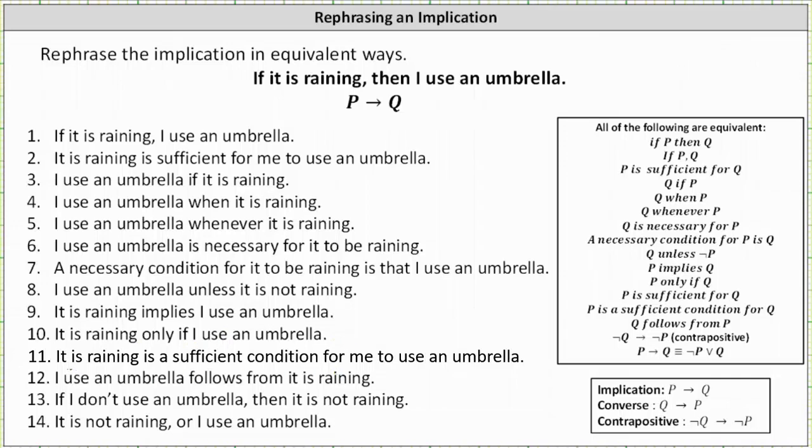Number 11, it is raining is a sufficient condition for me to use an umbrella. Number 12, I use an umbrella follows from it is raining.